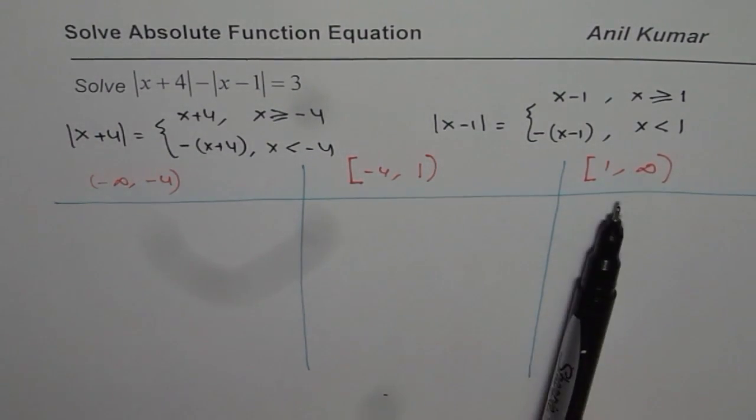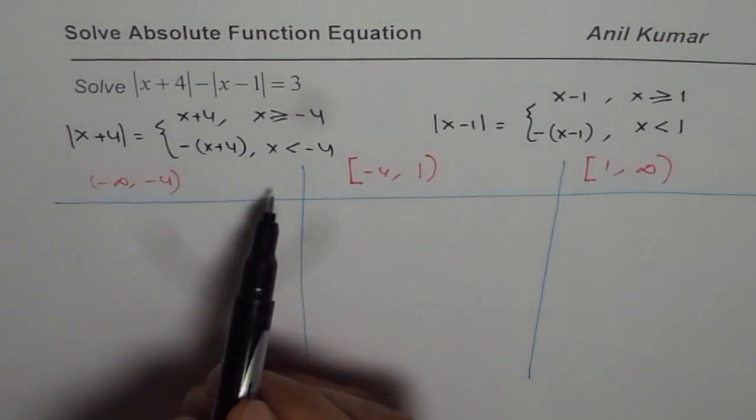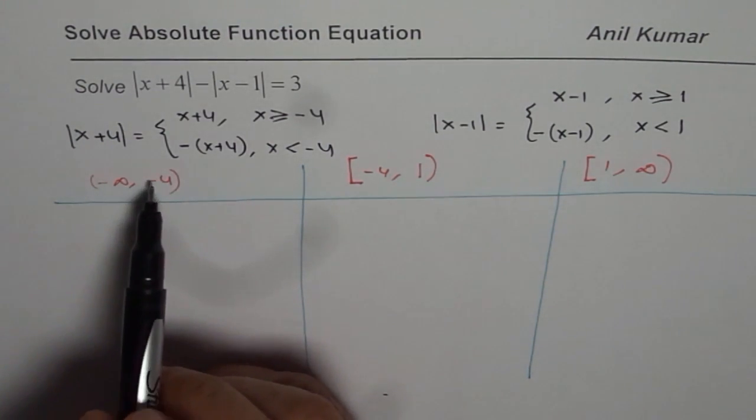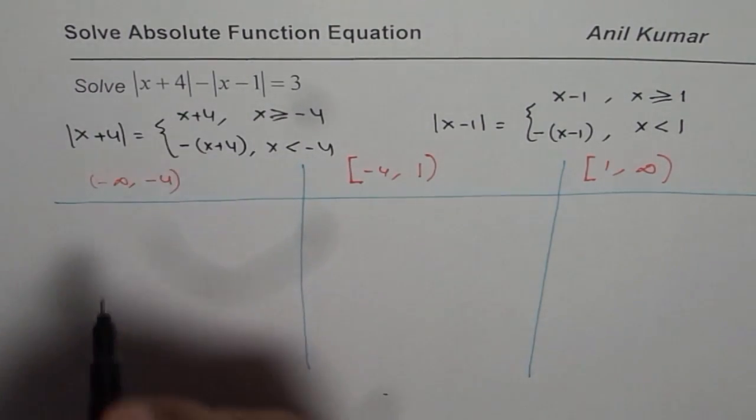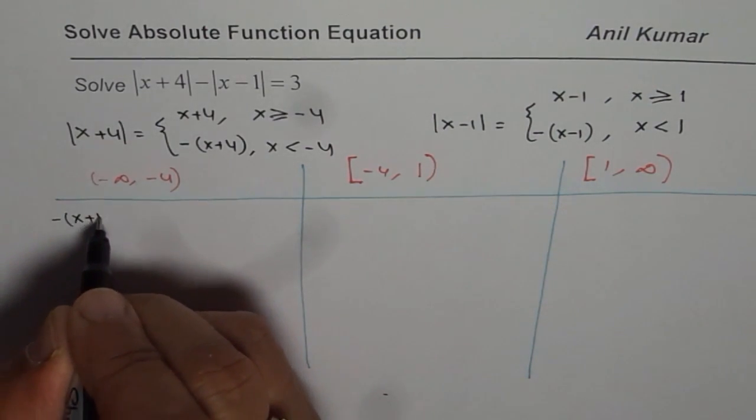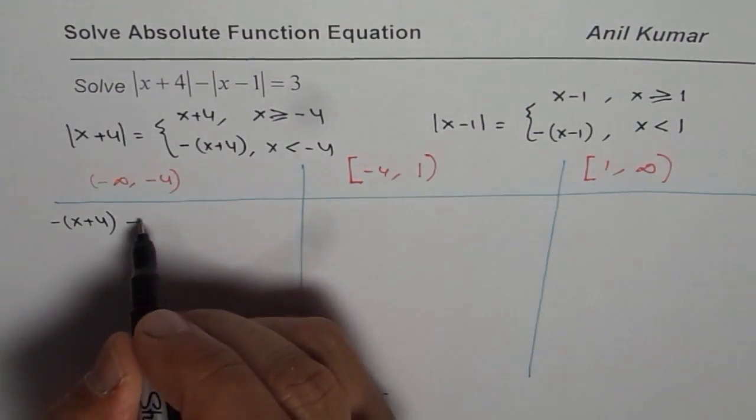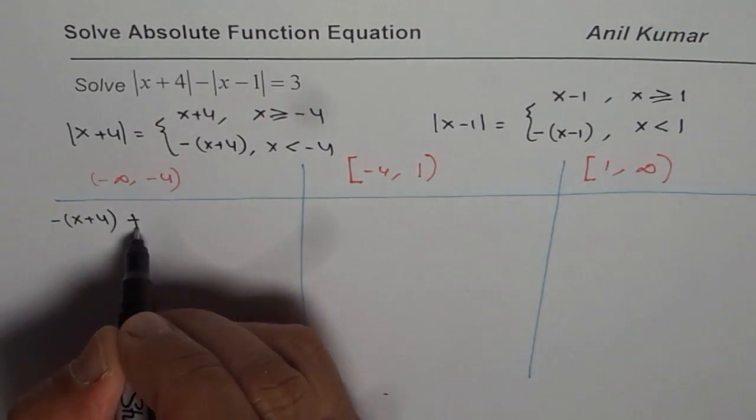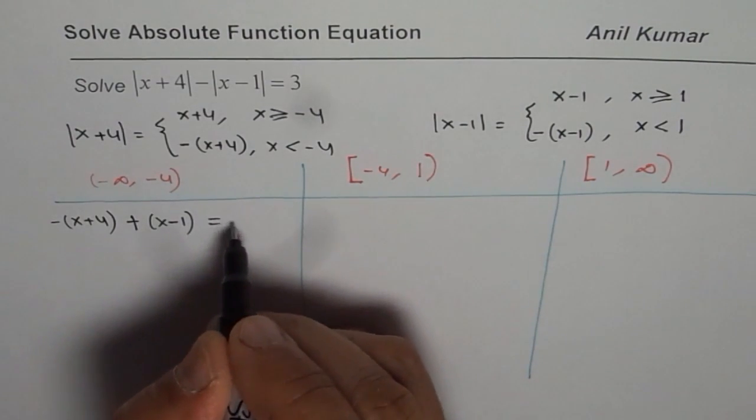Based on that, our equation will slightly change. When we're in the interval less than -4, we take negative signs for both. So this function becomes -(x+4) - [-(x-1)], which simplifies to -(x+4) + (x-1) = 3.